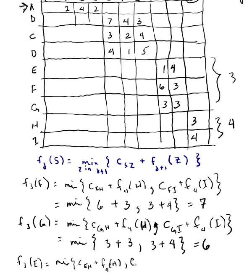And the cost to go from E to the other node Z in Stage 4, which is I, plus the optimal cost to go from I to your destination, which equals the min of E to H is 1.